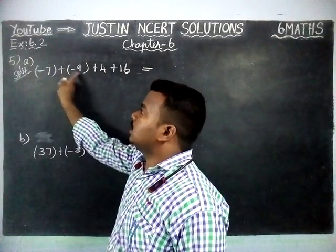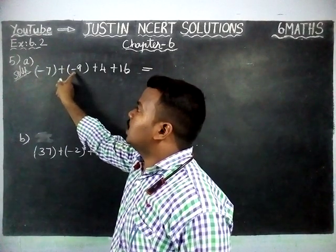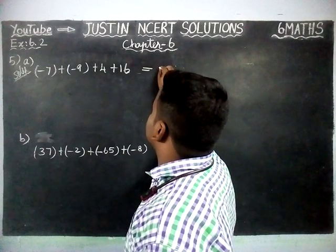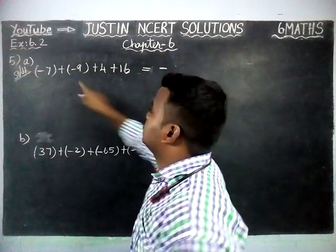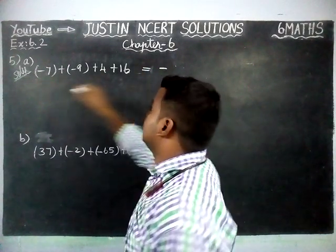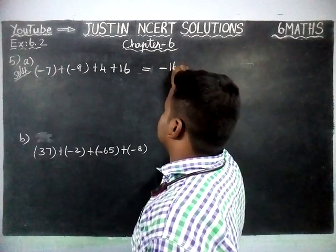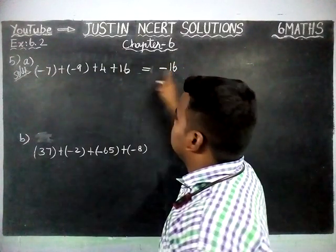So now, we are going to add these 2 integers first. Both also same sign. So, same minus will come here. Next, 9 plus 7 is equal to 16.